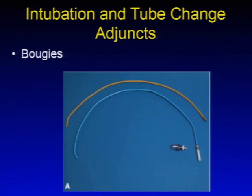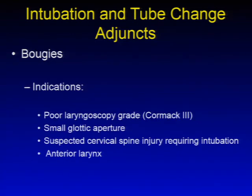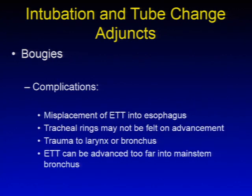The bougie, also known as the Eschmann stylet, is a semi-rigid guiding catheter. Once placed through the cords, you should feel the tracheal rings as it's advanced, then slide a tracheal tube over it into the trachea. Indications include poor laryngoscopy grade such as Cormack-Lehane grade 3, small glottic aperture, suspected cervical spine injury, or an anterior larynx. Contraindications include laryngeal disruption or inaccessibility of the oral cavity. Complications include ETT misplacement into the esophagus, failure to feel tracheal rings, trauma to the larynx or bronchus, or advancing the tube too far into the main stem bronchus.